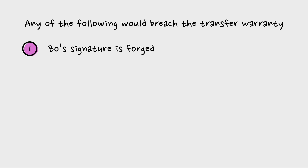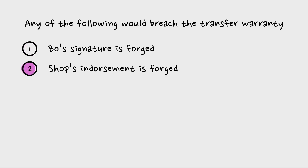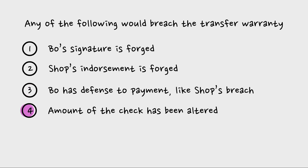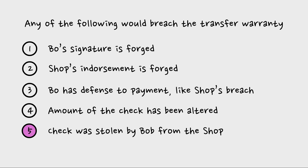Here are things that could breach the transfer warranty: if Bo's signature as drawer is forged; if the shop's endorsement is forged; if Bo has a defense to payment — such as the other party breached the underlying transaction; if the amount of the check has been altered; or if the check was stolen by Bob from the shop. Any of those things would violate the transfer warranty.